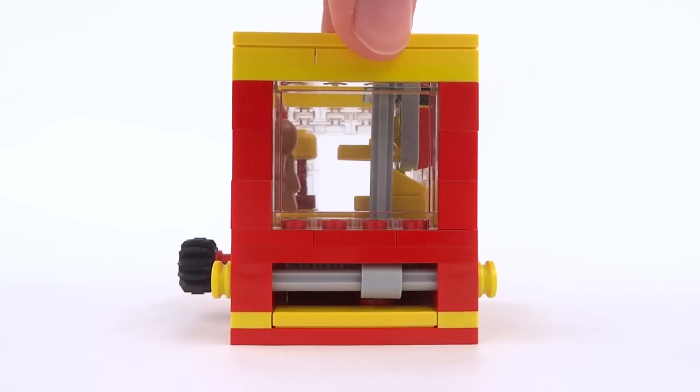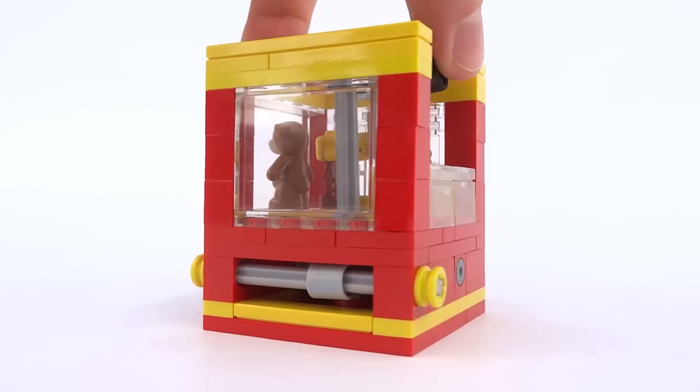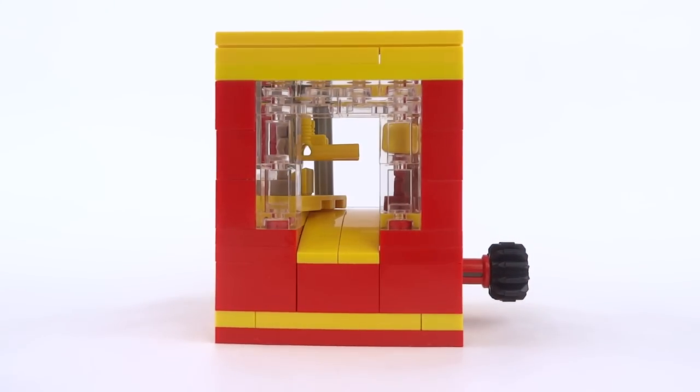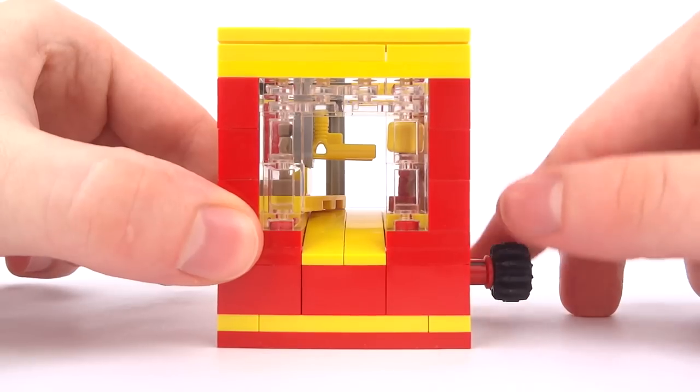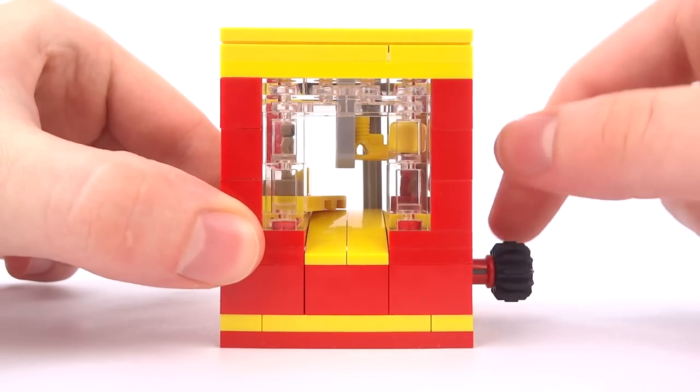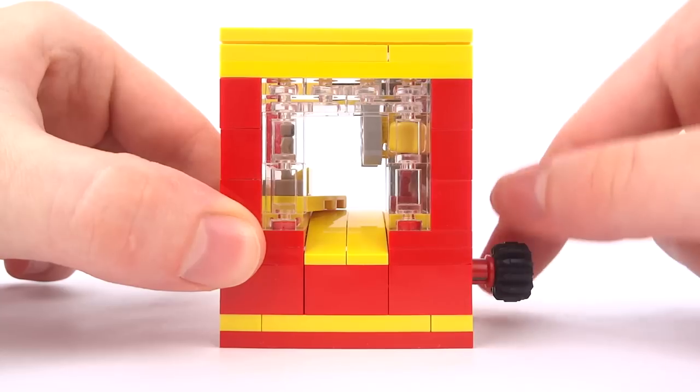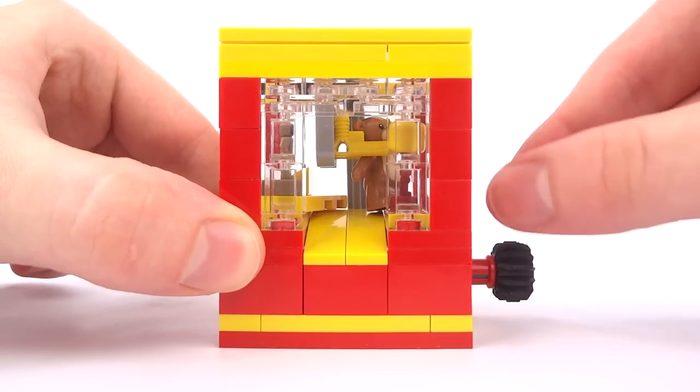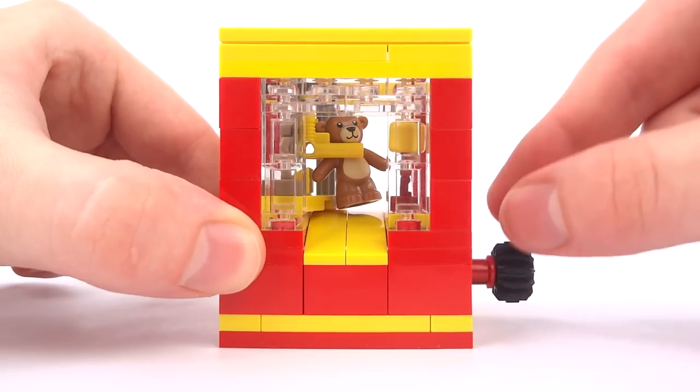The claw grabber machine has a compact design making it ideal for your minifigure scale arcades and fairgrounds. From this angle we can get a better look at the grabber mechanism which is operated by turning a single dial at the front of the machine. This adjustable grabber is able to smoothly pick up any toy that is placed in the center.